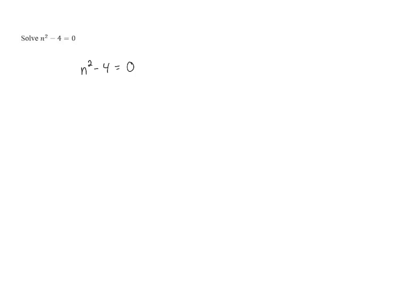The way to factor n squared minus 4 is to look at it as a difference of squares. When we factor that, we end up with n plus 2 times n minus 2 equals 0.